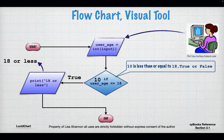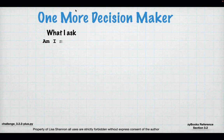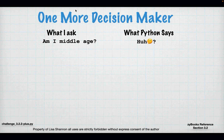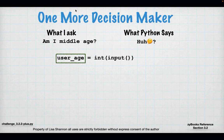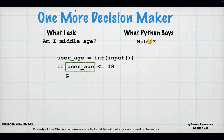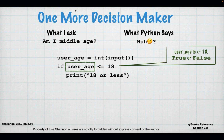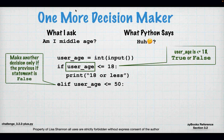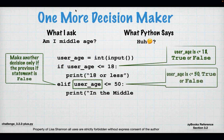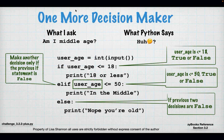Now we have the elif keyword. The question 'am I middle-aged?' makes Python look at me like I have three heads. Using userAge as input: if userAge is less than or equal to 18, print '18 or less'. Elif userAge is less than or equal to 50, print 'in the middle'. Otherwise print 'nope you're old'. That's how we incorporate elif.